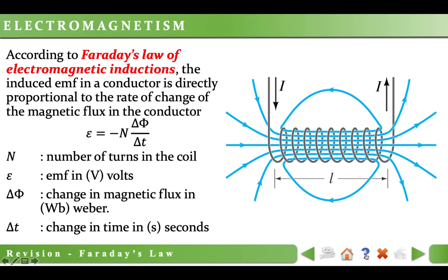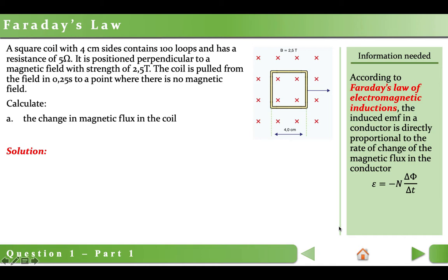Now we can solve a question to understand the topic better. A square coil with 4 cm sides contains 100 loops and has a resistance of 5 ohms. It is positioned perpendicular to a magnetic field with strength of 2.5 tesla. The coil is pulled from the field in 0.25 seconds to a point where there is no magnetic field. Part A: Calculate the change in magnetic flux in the coil. Change in magnetic flux is represented by delta phi, and delta phi equals final magnetic flux minus initial magnetic flux. Magnetic flux equals B times A times cosine theta, where B is the magnetic field strength, A is the area of the coil, and theta is the angle between magnetic field lines and the normal to the surface.